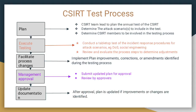Then you prepare a CSIRT test process. This consists of five stages: planning, executing testing, facilitating process changes, management approval, and updating documentation. In the first stage — planning — the team lead plans an annual test for the CSIRT, which includes defining attack scenarios and the members who should be involved in testing the processes.